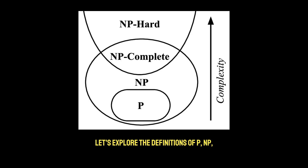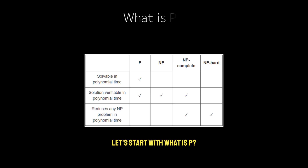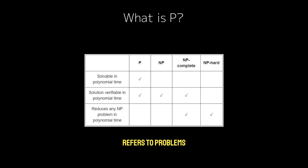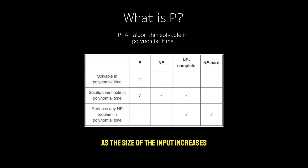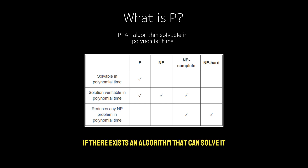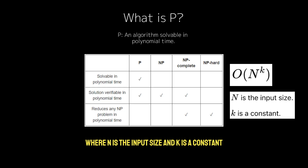Let's explore the definitions of P, NP, NP-complete, and NP-hard, and break down their significance in both theoretical and practical contexts. In computational complexity theory, P, or polynomial time, refers to problems that can be solved by an algorithm in time proportional to some polynomial in the size of the input. A problem is in P if there exists an algorithm that can solve it in O(n^k) time, where n is the input size and k is a constant.